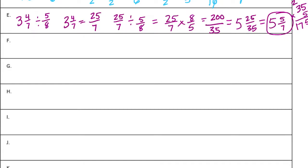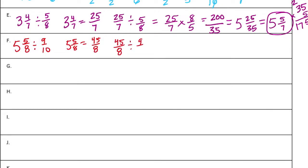Part F: five and five-eighths divided by nine-tenths. Let's make five and five-eighths into forty-five eighths. Forty-five eighths divided by nine-tenths — invert and multiply: forty-five eighths times ten-ninths. Forty-five times ten is four hundred fifty, eight times nine is seventy-two, giving four hundred fifty seventy-seconds.